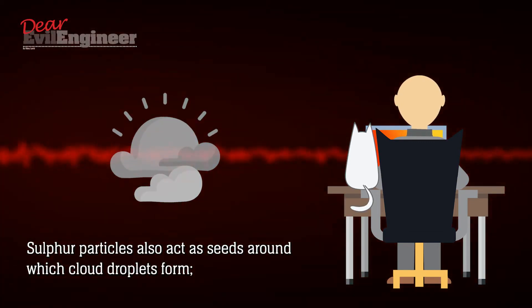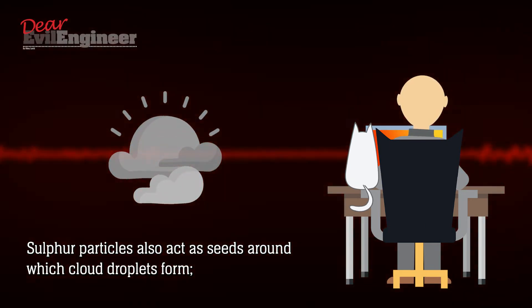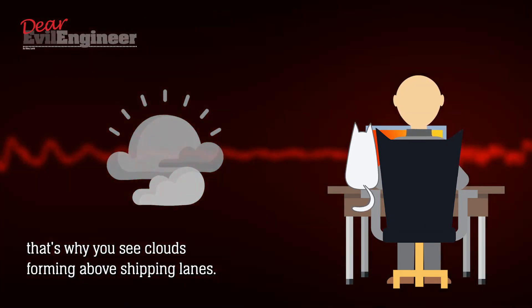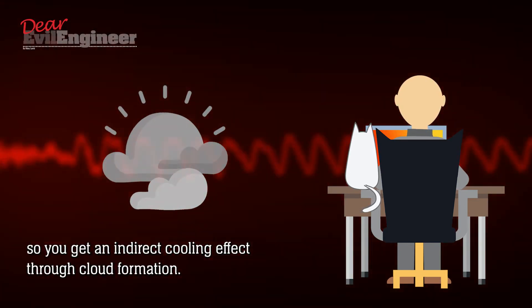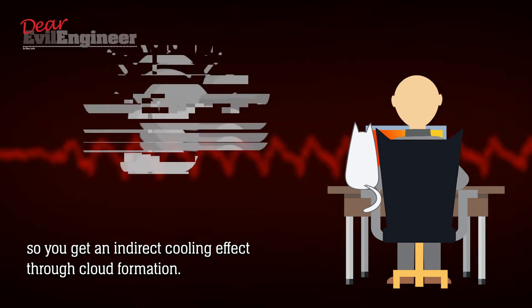Sulfur particles also act as seeds around which cloud droplets form. That's why you see clouds forming above shipping lanes. Clouds mostly reflect sunlight, so you get an indirect cooling effect through cloud formation.